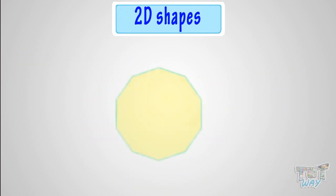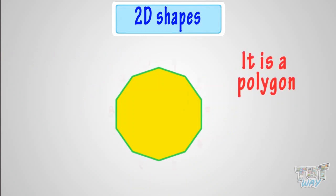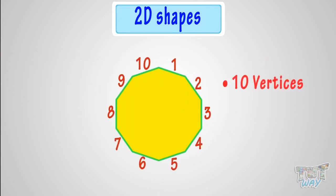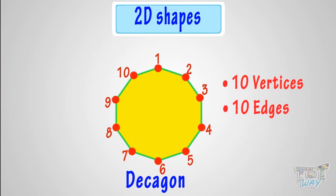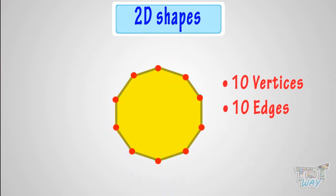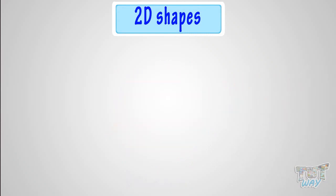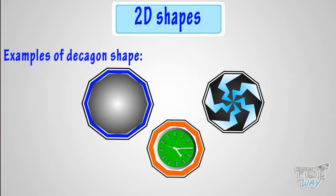This is a polygon that has ten straight sides, and is called a decagon. It has ten vertices and ten edges. These are some of the decagon-shaped things.